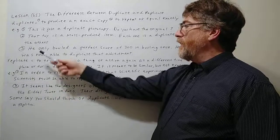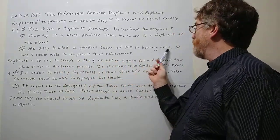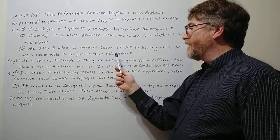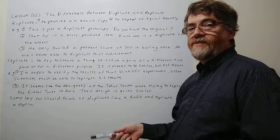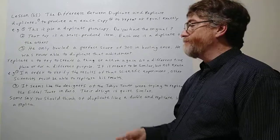Number three. He only bowled a perfect score of 300 in bowling once. He was never able to duplicate that achievement. He was never able to bowl exactly 300 again. So he was never able to duplicate it.